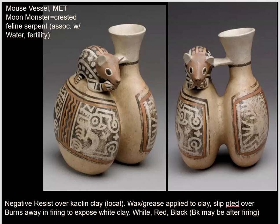The Recuay folks consistently and to high advantage use negative resist. They apply it over kaolin clay, which is local and white. The artist would apply something waxy or greasy to the surface, which would resist the slip painted on. That waxy material would be burned off during firing, and when the pot was finished the white clay underneath would be exposed. The major colors are white — the color of the vessel — red, and black. Sometimes the black paint is applied after firing, but not always.